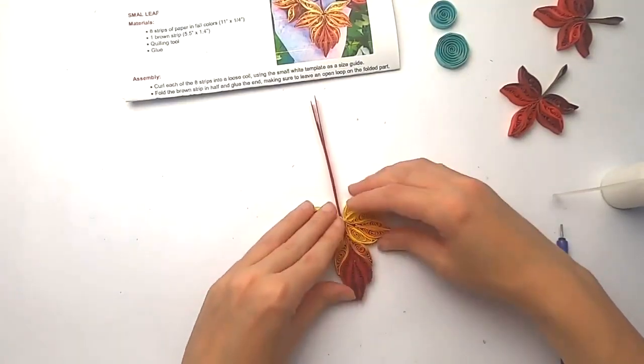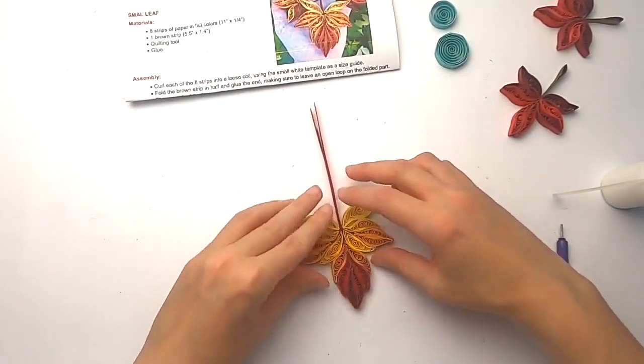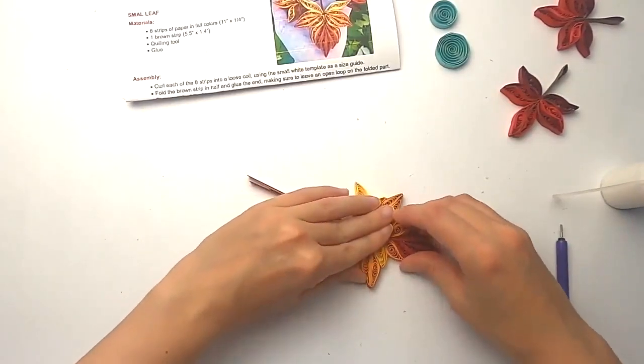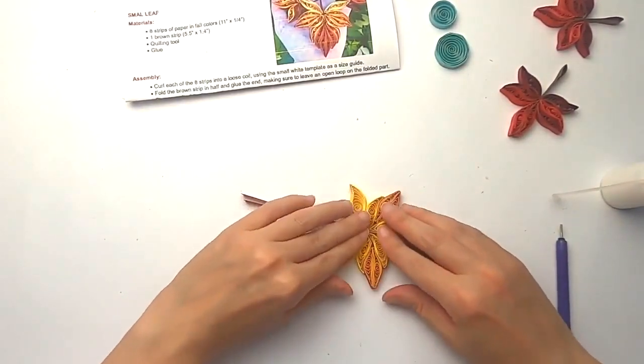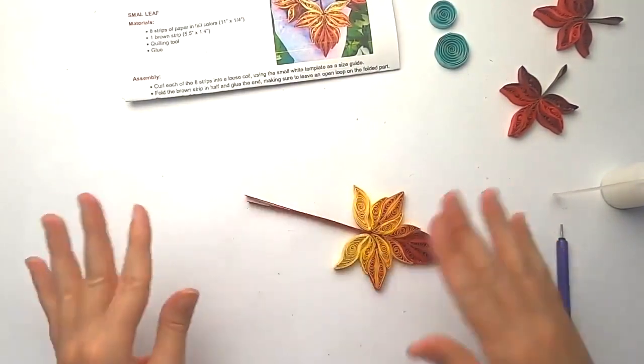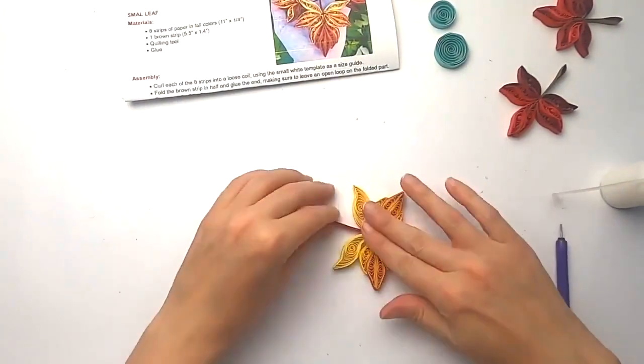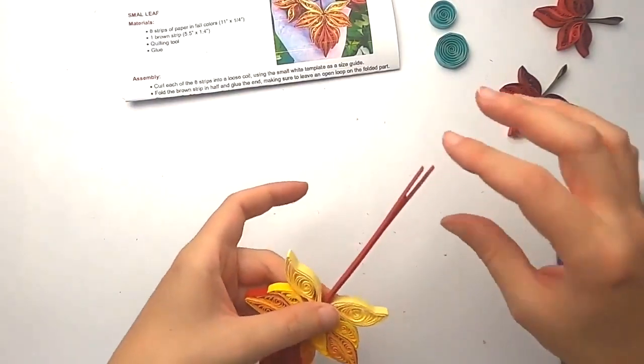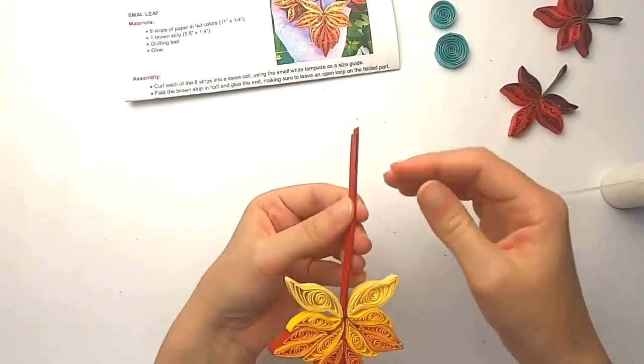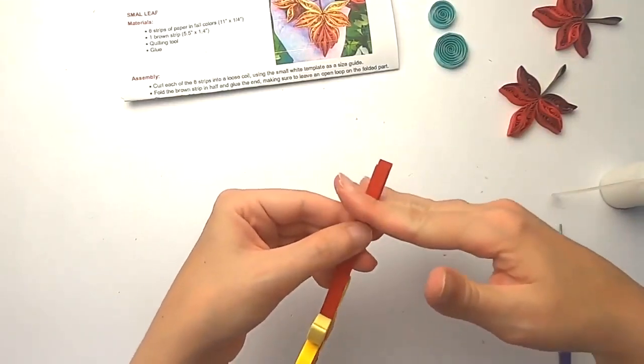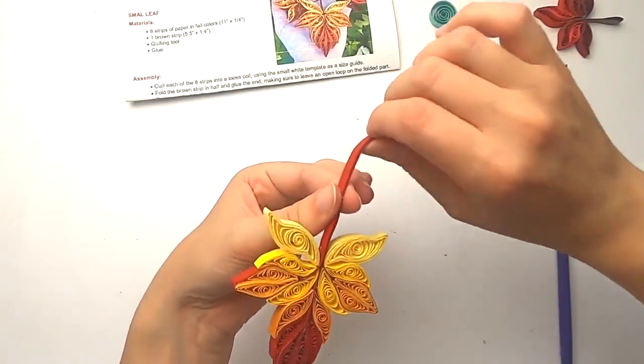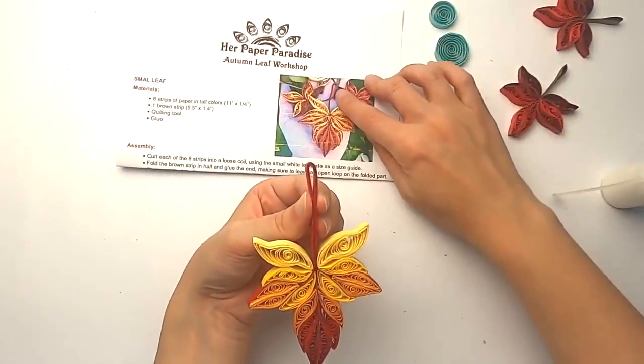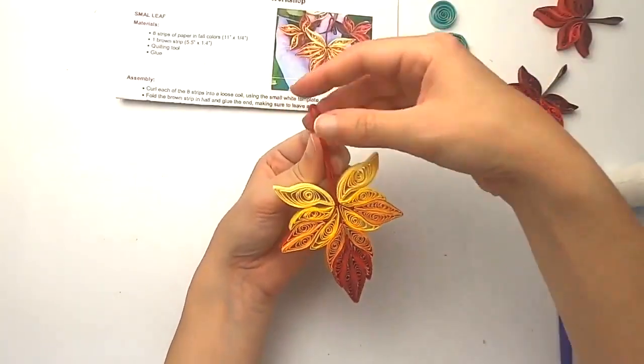So once everything is glued down, you can always keep shaping it a little bit. Be gentle though, because we don't want things to unstick before they have time to dry. So if you want, let it all dry and then you can shape it a little better. But this is pretty much the leaf. What I do in the end is I make sure this is all glued together. I trim a little bit of it and then I fold the rest over and glue there to make a loop, like you see in the photo. That way you can hang this leaf wherever you want.